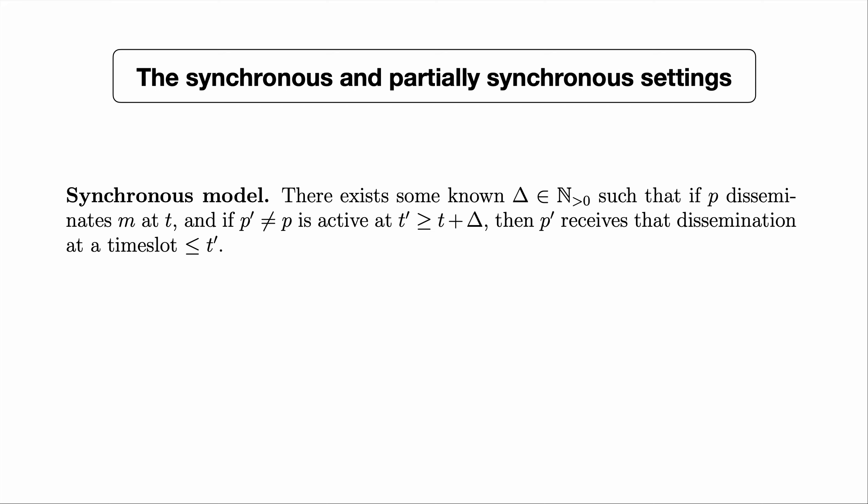For now we're just considering a dissemination model. We want to consider analogs of the synchronous and partially synchronous settings. We have to adjust the definitions to make sense in a scenario where players might not always be active. What I'm going to do next is go through an obvious way of modifying the definitions of the synchronous and partially synchronous models so that they make sense in this new context. Nothing I talk about today will be massively sensitive to the exact definitions — I'll write them down in such a way as to make our impossibility results as strong as possible.